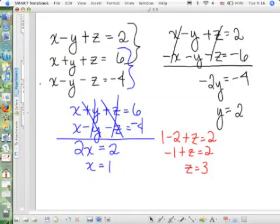When you plug 1, 2, and 3 in for this, you should get 6. When you plug 1, 2, and 3 in right here, you should get negative 4. So when you get your solutions, make sure that they do work for all three of your equations, because if they don't, then you did something wrong.